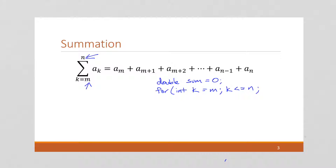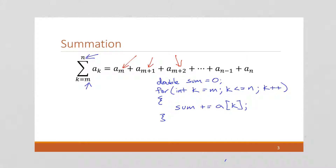We want to keep going as long as k is less than or equal to n. With summations, we go up by 1 each time — this is m, then m plus 1, m plus 2, and so on — which means we're always going to have k++. Then what we're doing is summing these all together, so we can say sum += a[k]. This is using array notation. And then we can return the sum. So this summation is really pretty identical to a for loop.